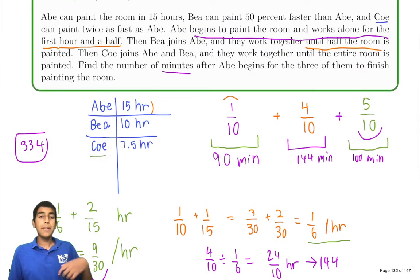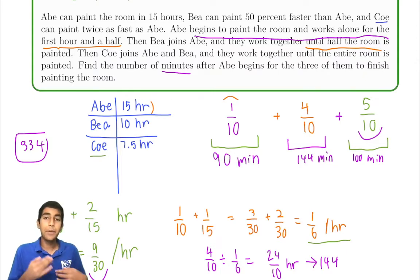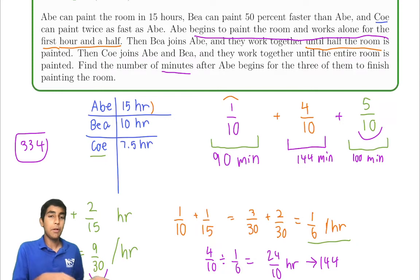To summarize, basically we just take the per hour rate for each of these three people, and then we add them up for the amount of people that are working at a given amount of time. Calculate the number of minutes it takes for each stage to finish.